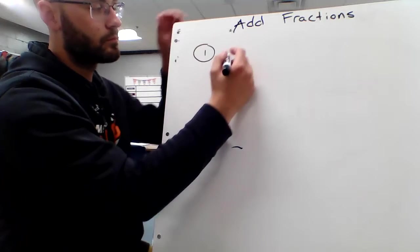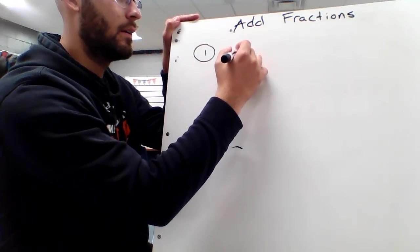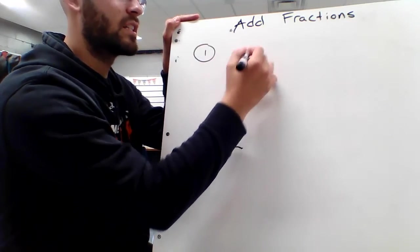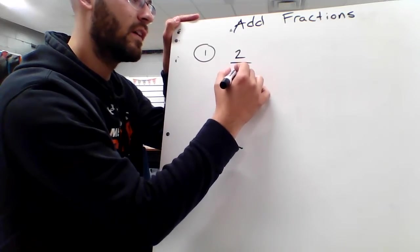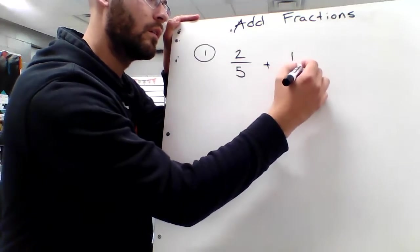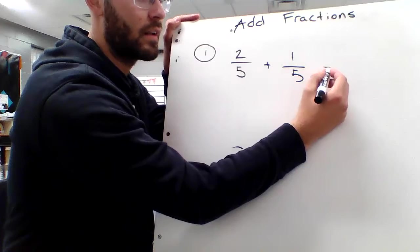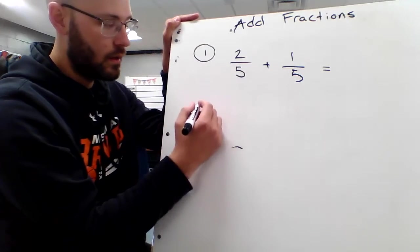Here's question one. I want you to try, it'll get progressively harder, 2 fifths plus 1 fifth. Something that already has a common denominator, number two.